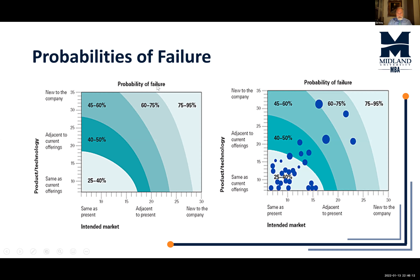Here is a graph showing dots that represent new products. The larger the dot, the greater the profit potential. Some products have greater profit potential but also more risk and a greater probability of failure. Others have a much lower probability of failure and lower risk, but they are also much lower in potential for profit.